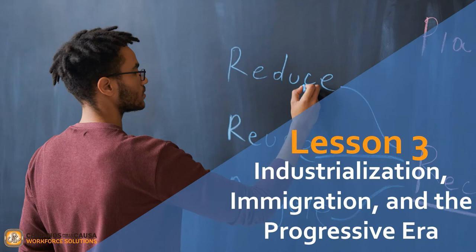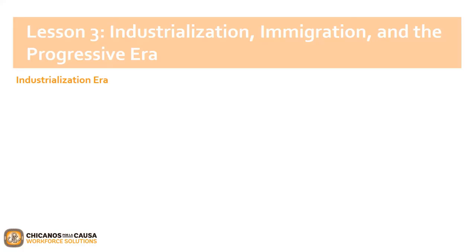Welcome back. We are now moving on to lesson three: Industrialization, Immigration, and the Progressive Era. During this lesson, we will focus on the economical and population growth within the United States. Due to the increased population, there was an industry that grew exponentially — industrialization. Industrialization is the economic change moving from an agrarian society to an industrial one.